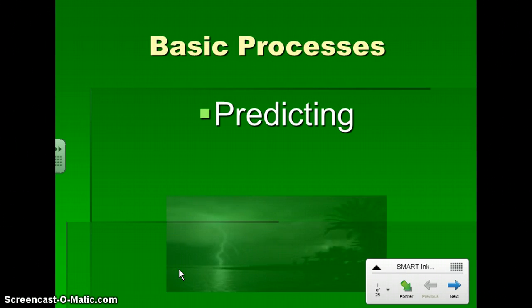The next basic process then is predicting. And this involves making an inference about a future event based on current evidence or past experience. Again, this is in the textbook on page 150.